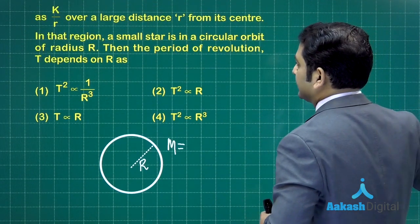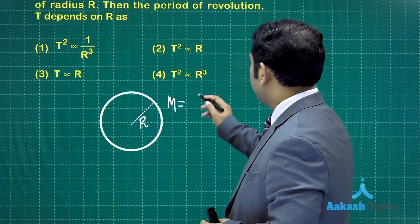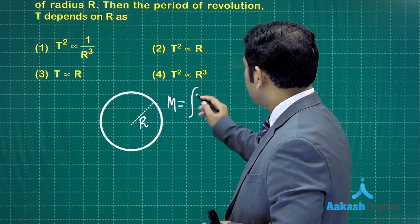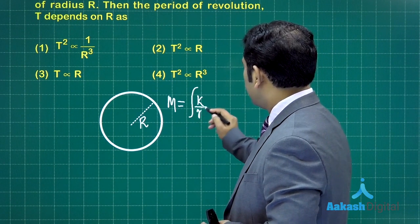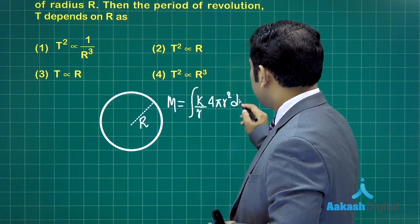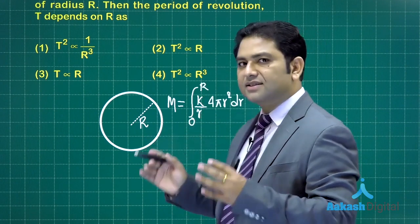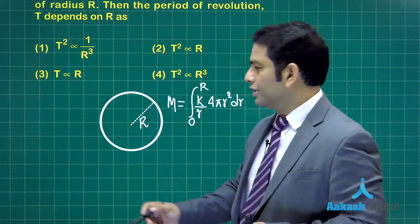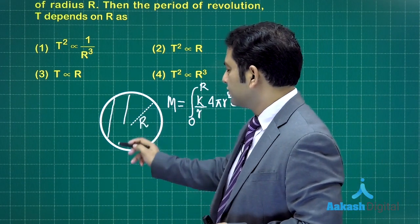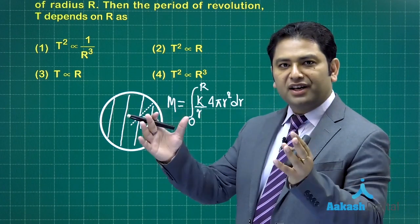So that mass is going to be something like this, and the value of density is k by r that's given. So let's see that will be equals to integral of k by r, 4 pi r square dr, limit from 0 to capital R.